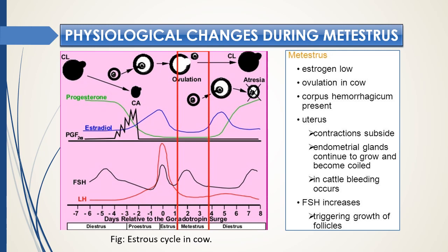Metestrus is the phase when estrogen level will be low. In cow, ovulation occurs here because it takes about 20 to 48 hours after the surge of LH to ovulate. Corpus haemorrhagicum forms during this phase. In the uterus, contraction will be minimal and subside. Endometrial glands continue to grow and become coiled. In cattle, sometimes a bleeding phase is seen. Follicle-stimulating hormone is at an increasing level to trigger growth of follicles for future cycles.